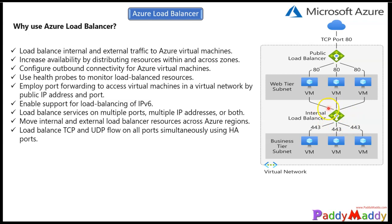You can also have an internal load balancer. With an internal load balancer, it uses a private IP address rather than a public one. These communicate with back-end business-tier machines on different ports, and those ports are fully monitored with health probe monitors.